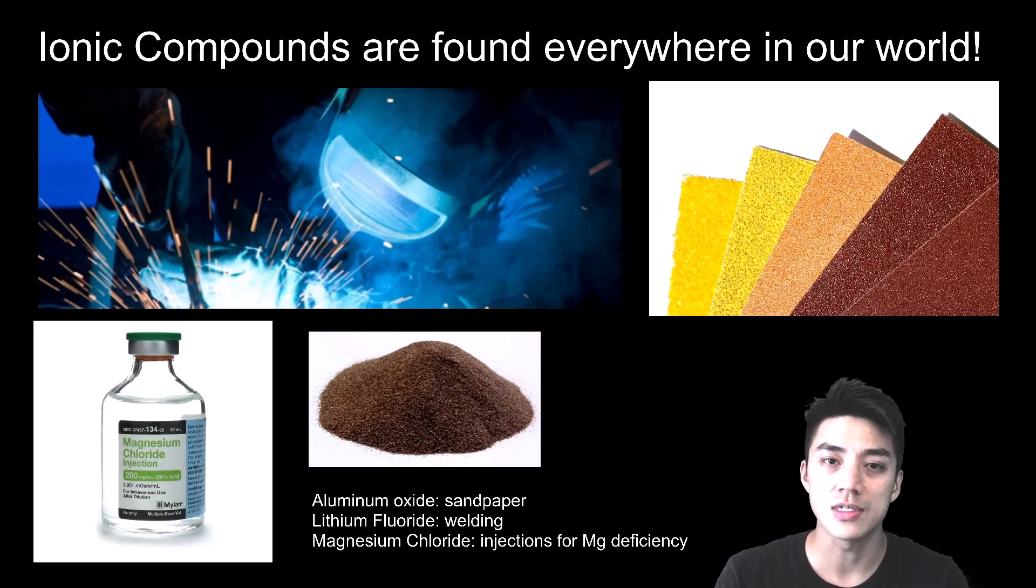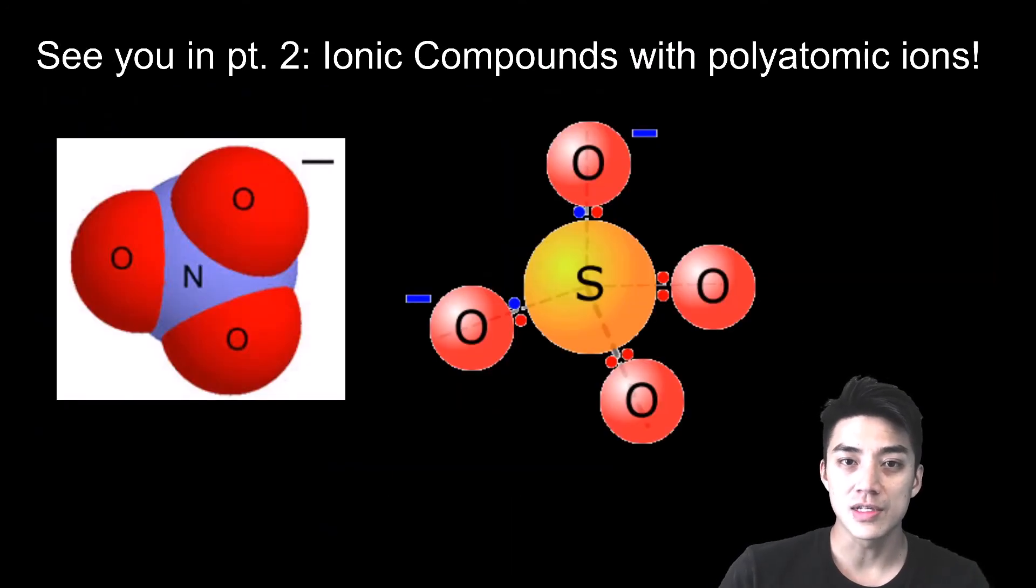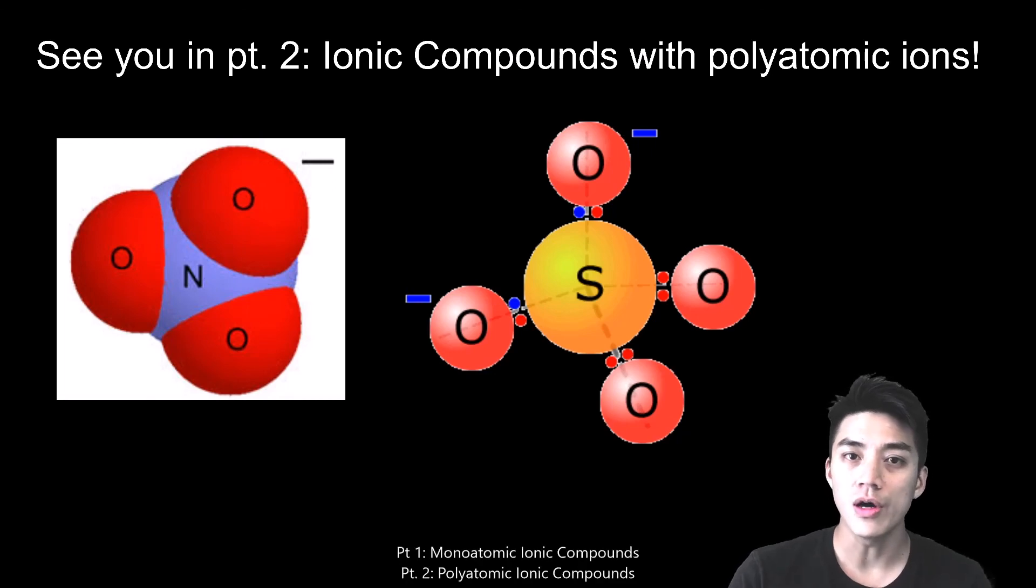All right guys thanks for listening and tuning in. I think I'll stop here and I will call this part one, naming ionic compounds with monatomic ions. When I see you in part two we'll step it up a bit and we'll learn how to name ionic compounds with polyatomic ions. I'll see you there. Thanks for watching Wind Chemistry and I'll see you next time.